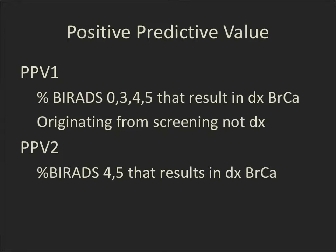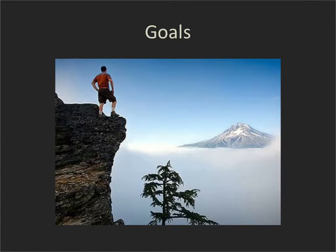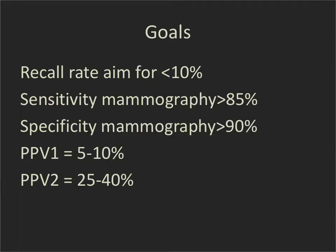PPV2 is the percentage of BI-RADS 4 and 5 that result in a diagnosis of breast cancer — generally these are the ones we really pay attention to, and PPV2 originates from the diagnostic exam. The national goals are: recall rate under 10% (though this may change with wider tomosynthesis adoption), sensitivity greater than 85%, specificity greater than 90%, PPV1 between 5% and 10%, and PPV2 between 25% and 40%, originating from BI-RADS 4 and 5 on diagnostic mammograms.